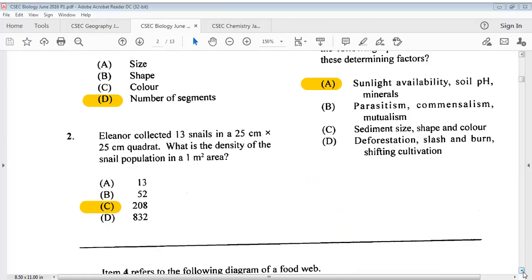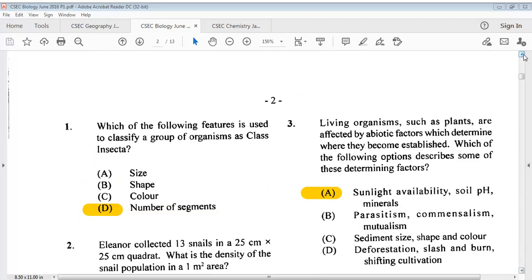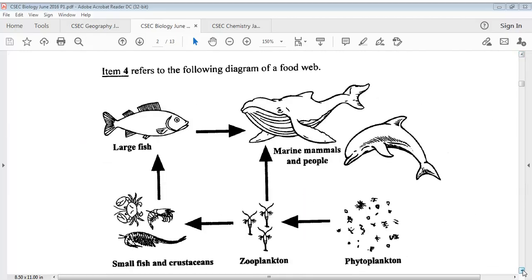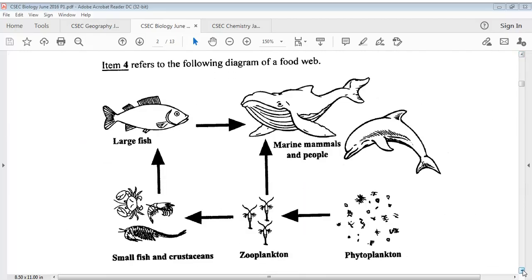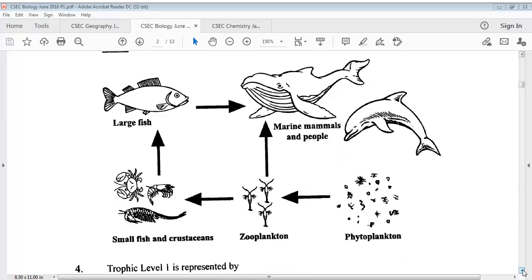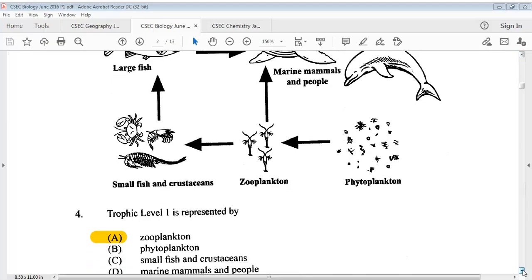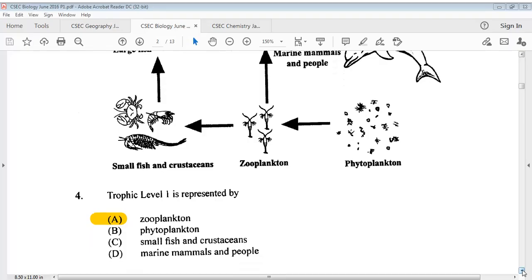The answer for question 2 is C. Let's go to question 3. The answer for question 3 is A. For number 4, here we have a diagram of a food web. Question 4 says tropical level 1 is represented by. The answer is A.